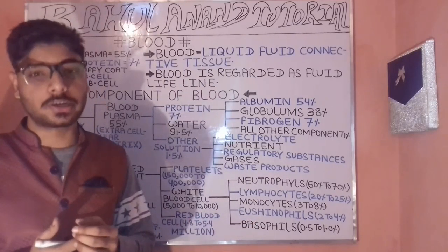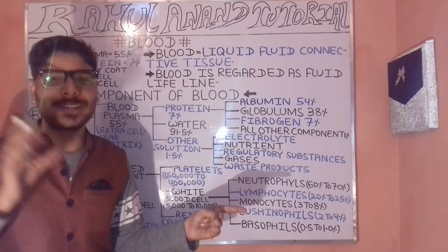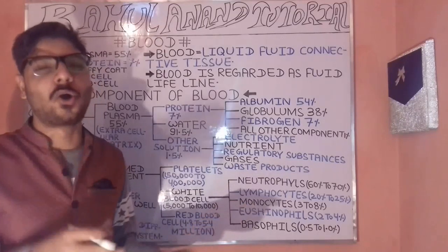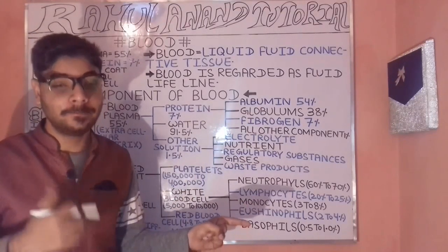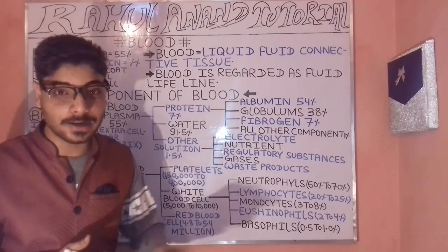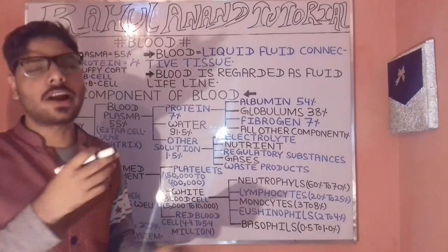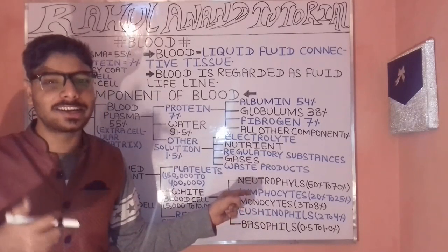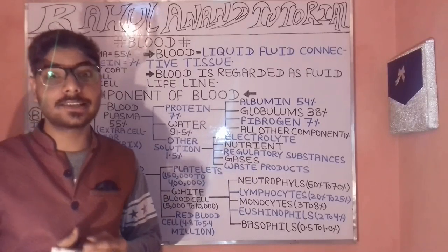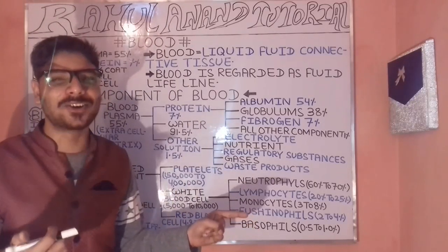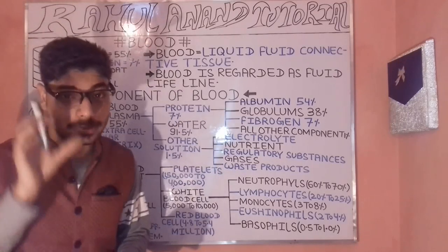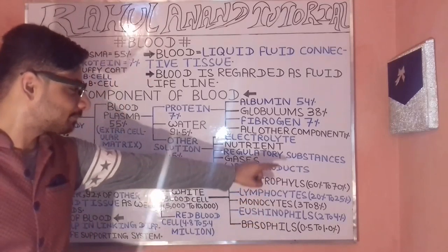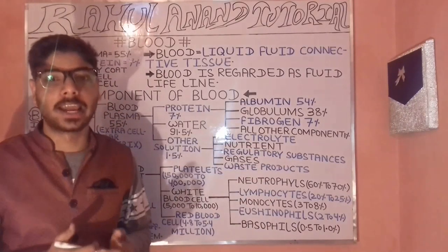Nutrients are divided into macronutrients and micronutrients. Examples include molybdenum, copper, zinc, sulfur, phosphorus, potassium, and calcium. Regulatory gases include oxygen, nitrogen, and hydrogen — these are life-supporting gases.